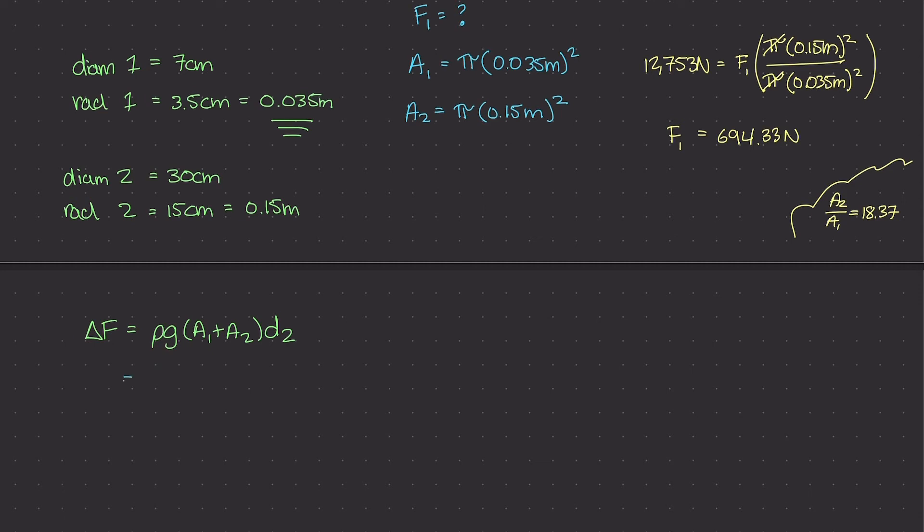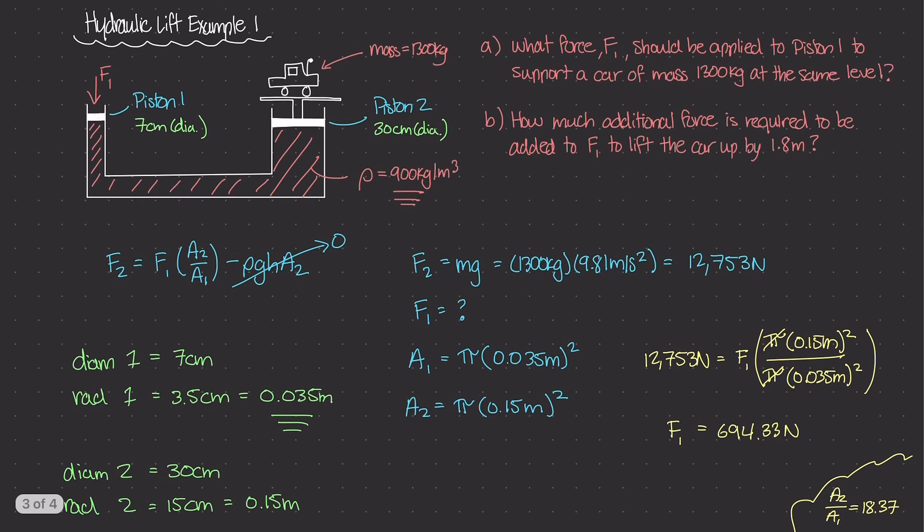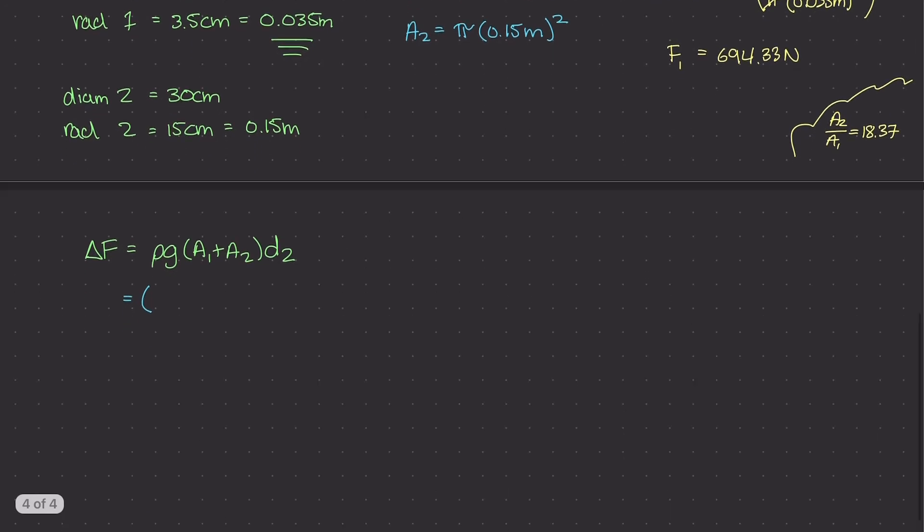So the very first term is this rho term. And if you remember from the last video, the mass density for the fluid contained inside of the hydraulic lift was 900 kilograms per meter cubed. So that will be 900 kilograms per meter cubed times our gravitational constant, which is 9.81 meters per second squared.